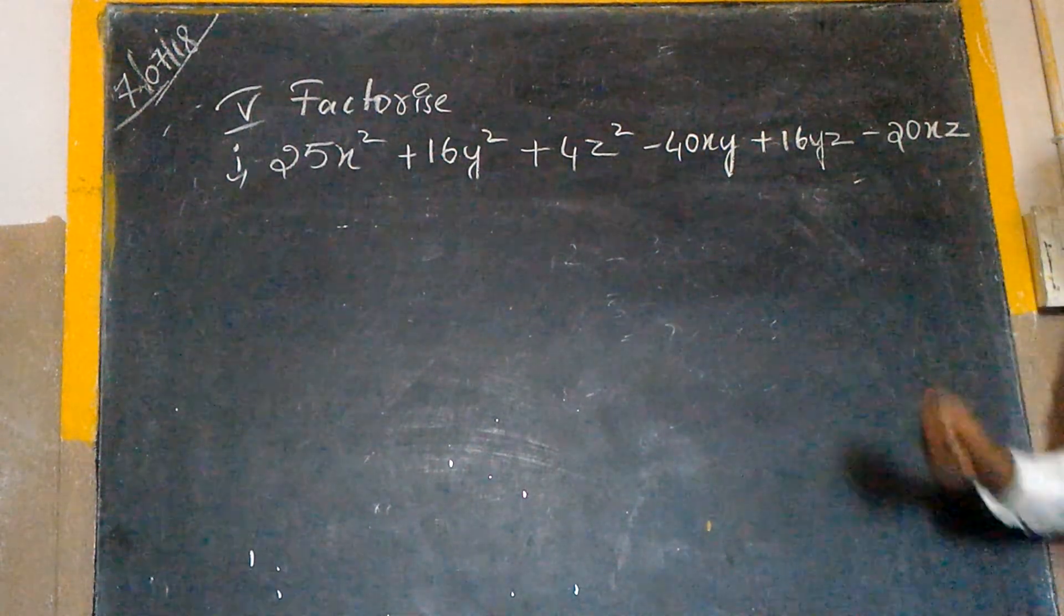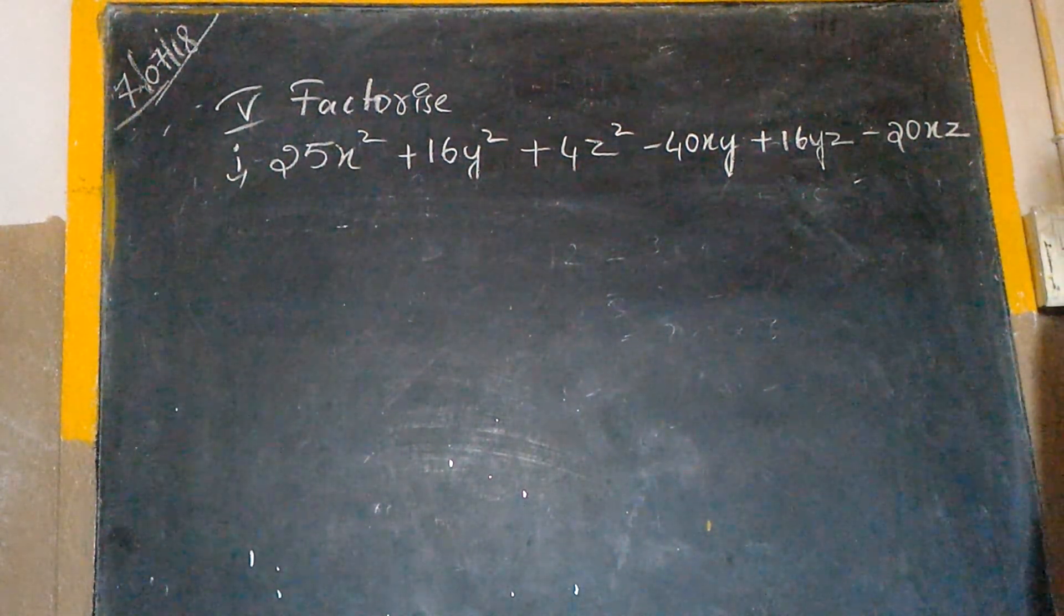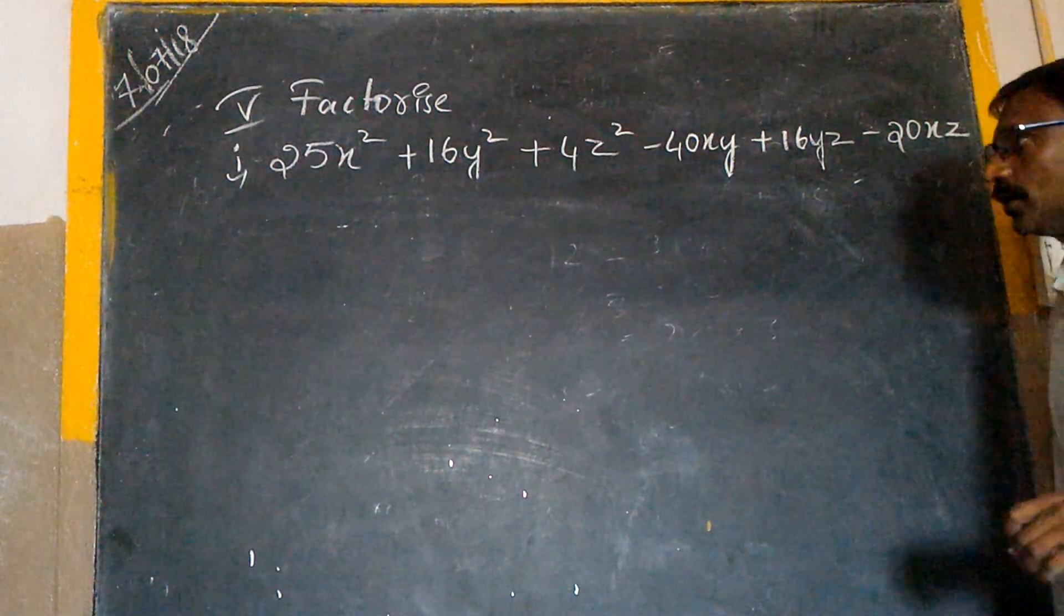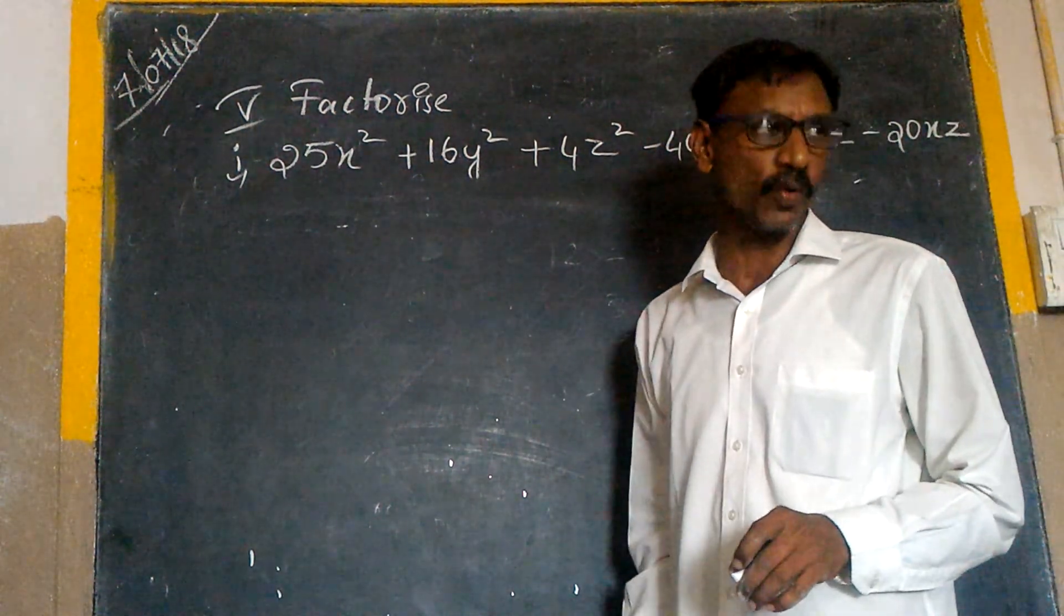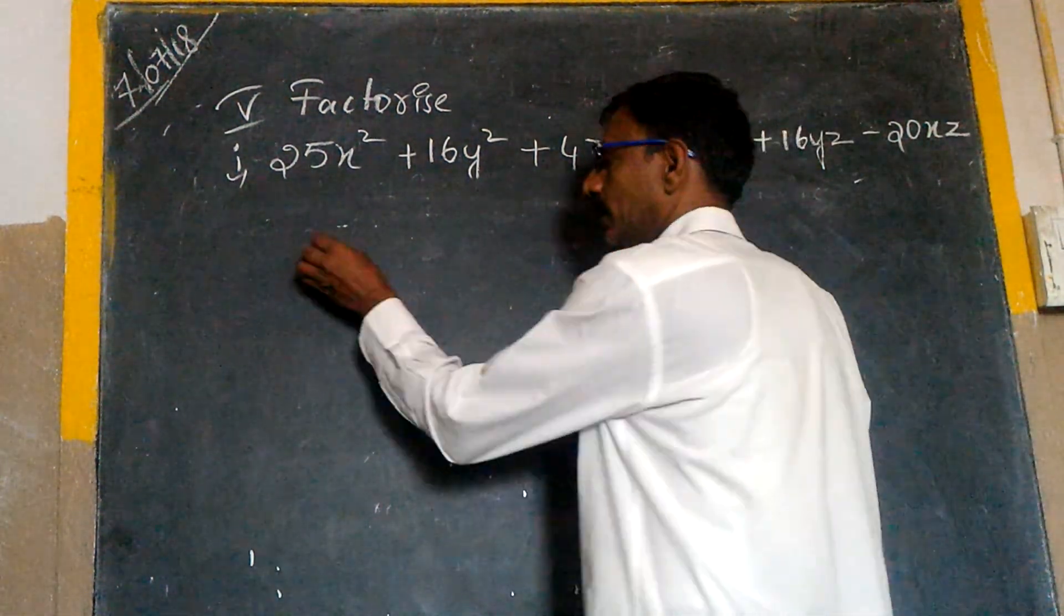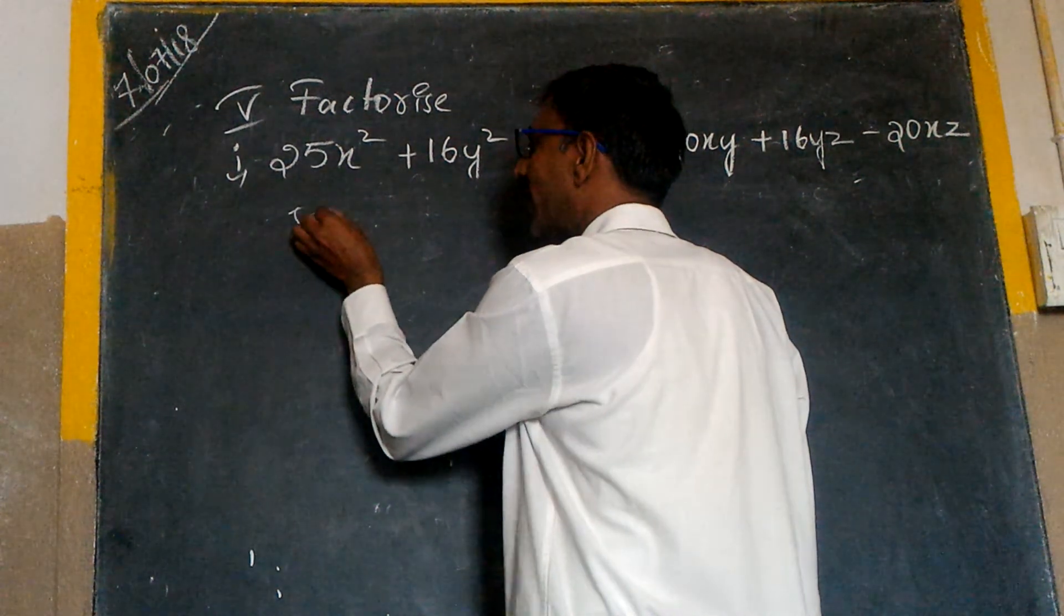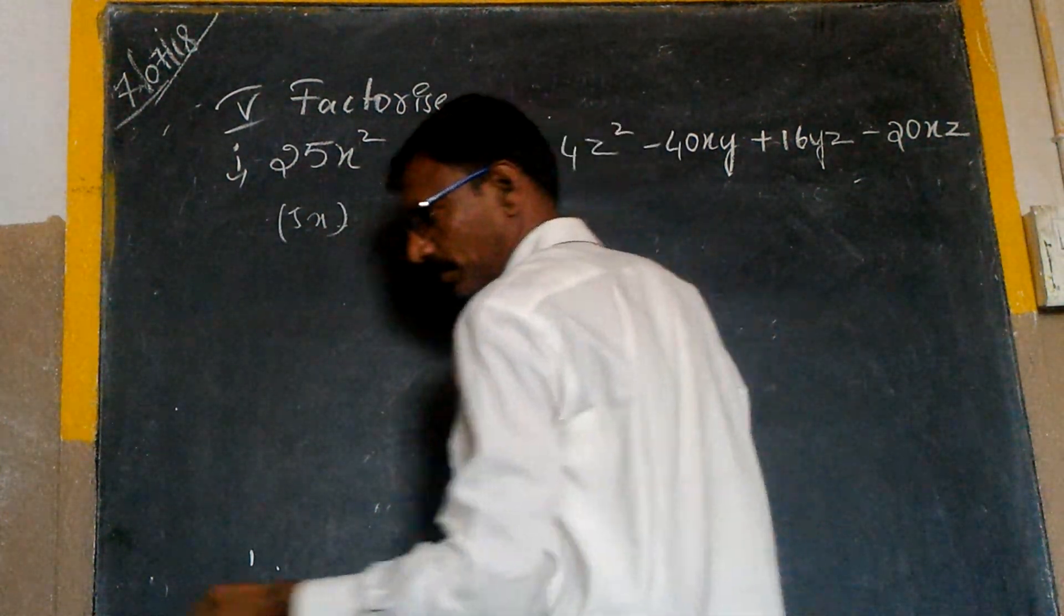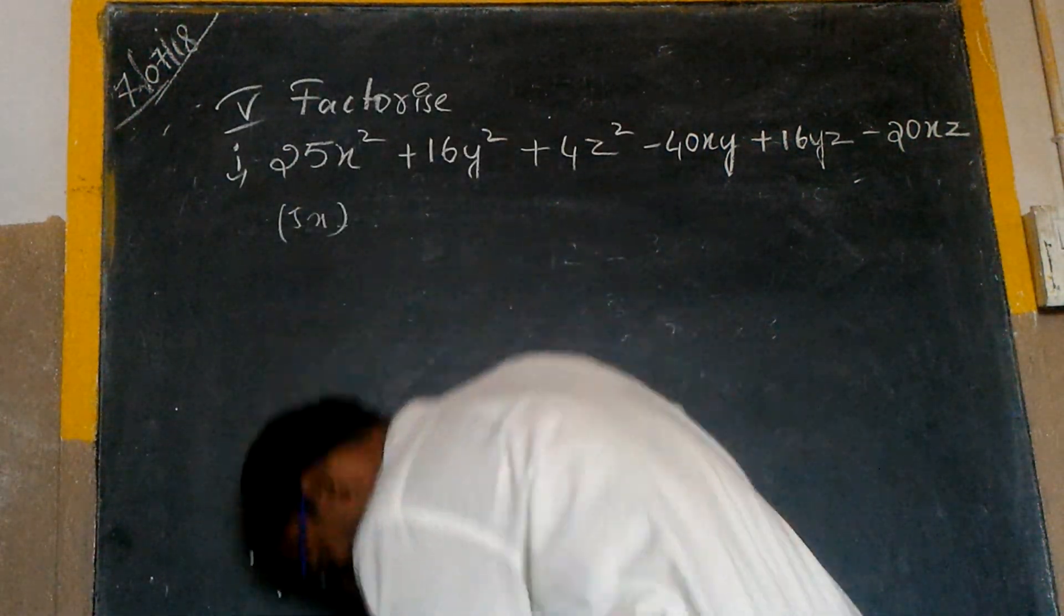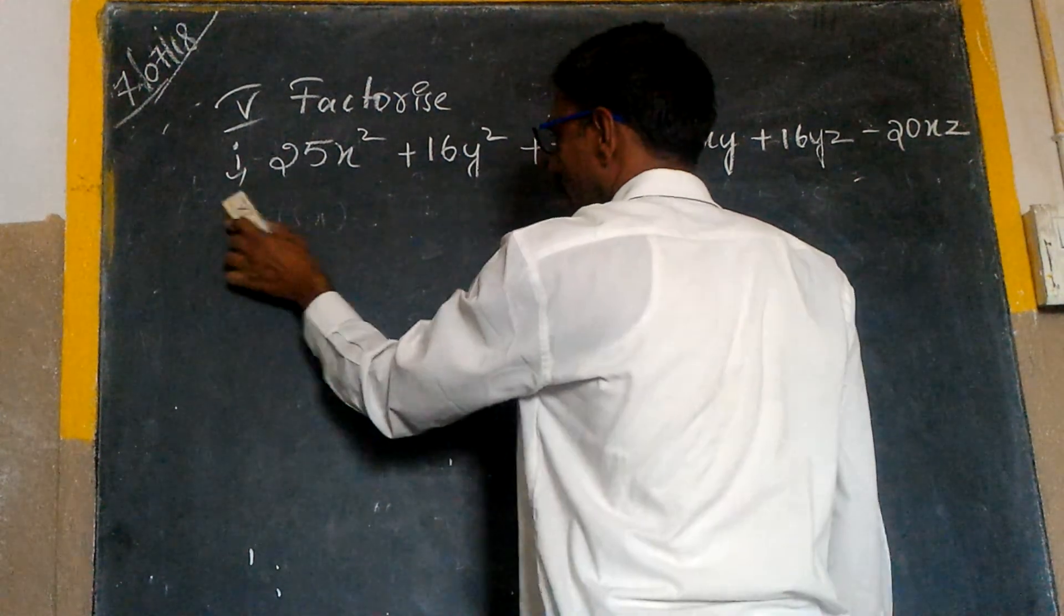Here and here, what we have common? X is X, X is negative term. So here we have 5x whole square. We can write this as 5x whole square. Before going to explain this one, let's explain, okay.